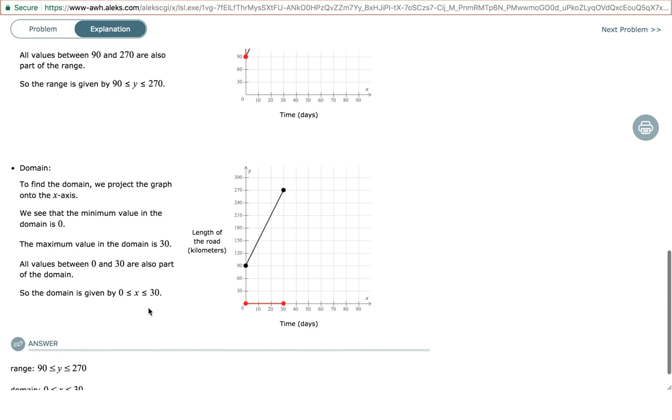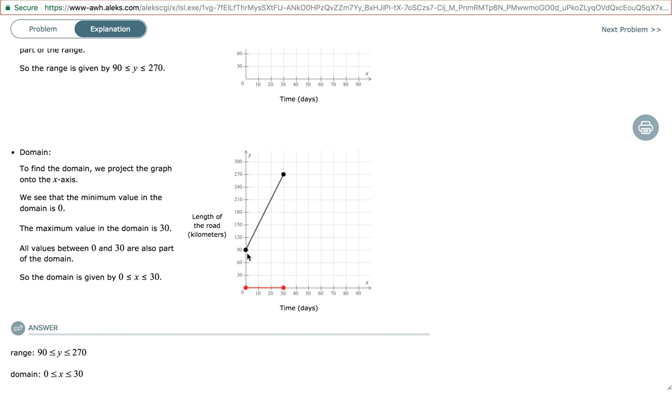Now, the domain. The lowest value of the domain, in this case, is 0 and its highest value is 30. So the domain can be written as 0 less than or equal to x less than or equal to 30. Here you have both the domain and the range for this graph.